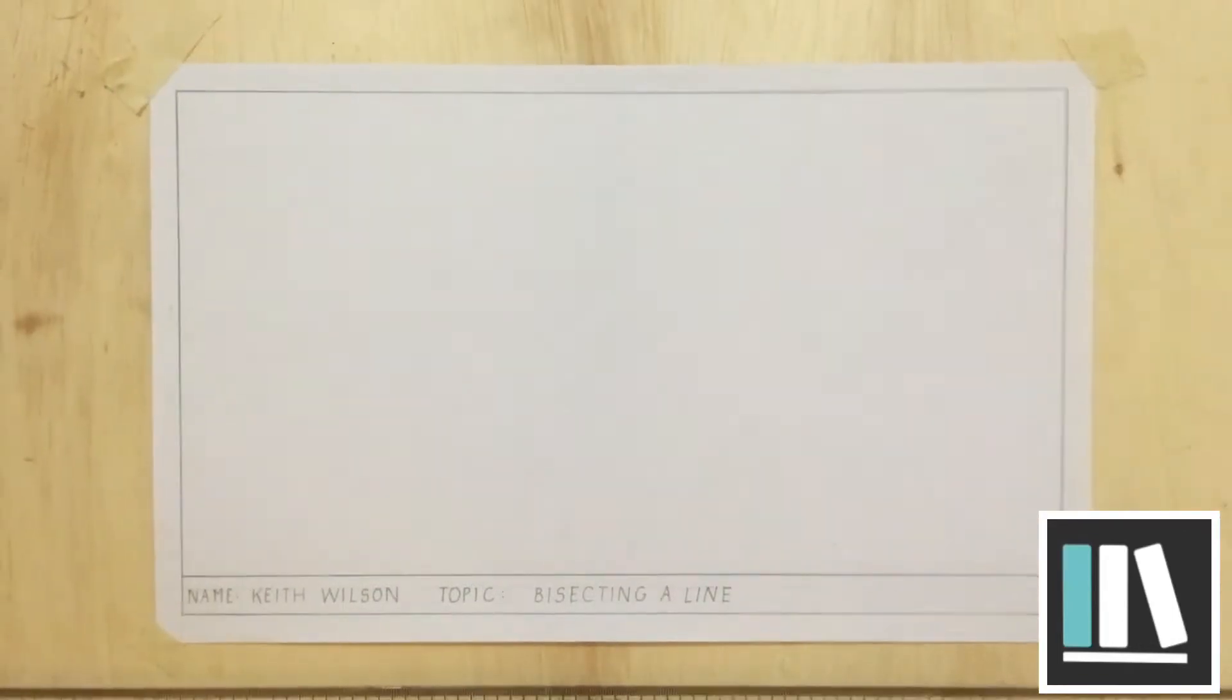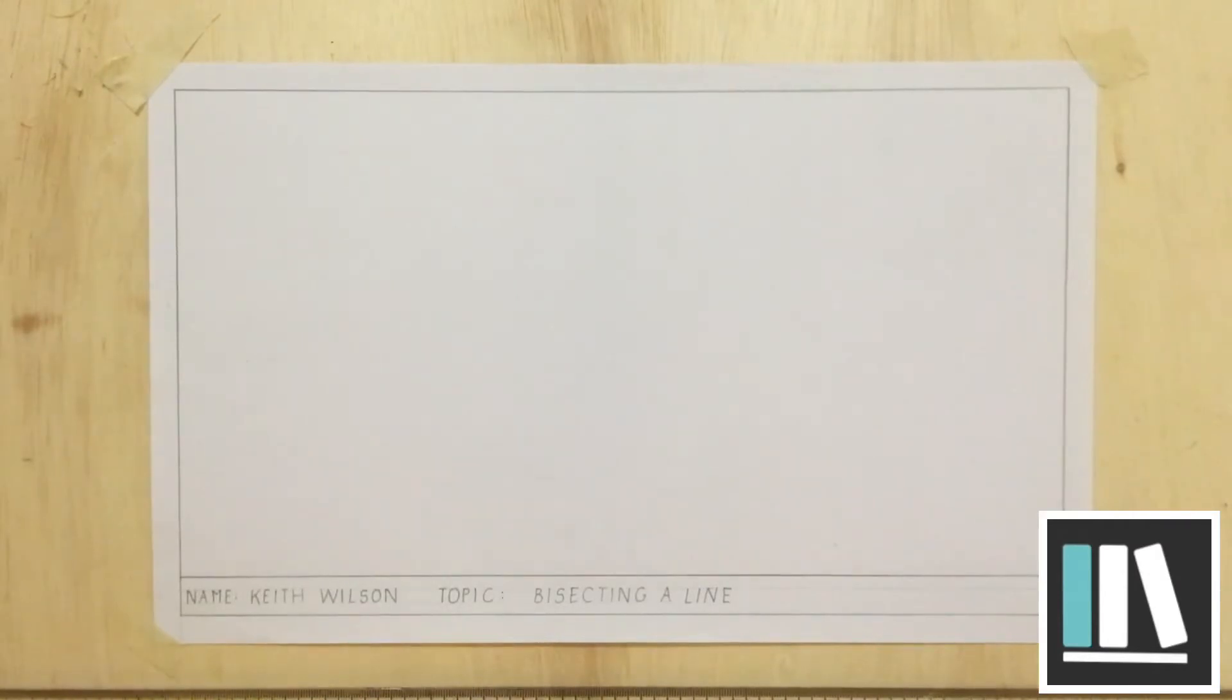Okay, today we are going to bisect a line of measurement 10 centimeters or 100 millimeters. Now, before we can bisect that line, we have to firstly draw that line.